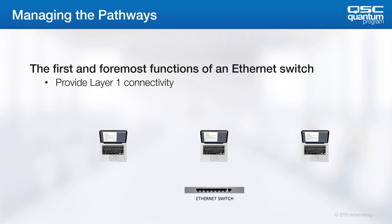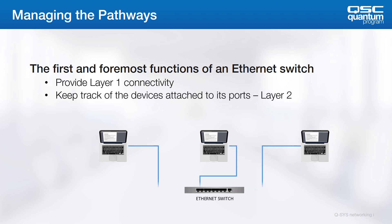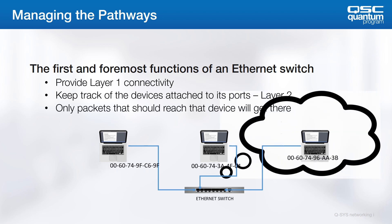Now let's think about how the media layers work together to make traffic flow, which involves a very important part of the network: the Ethernet switch. The first role of the switch is to provide Layer 1 connectivity — we need to have electrical connections to get the job done. The Layer 2 function of the switch is to keep track of what MAC addresses are attached to each port. The switch will build a table to keep track of those addresses, and its job from that point forward is to make sure that only packets destined for those devices get to the corresponding ports.